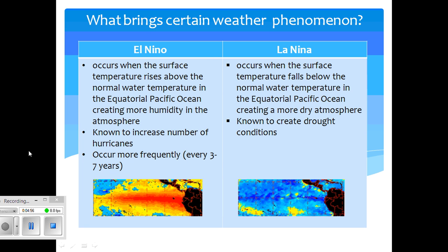El Niño occurs when the surface temperature rises above the normal water temperature in the equatorial Pacific Ocean, creating more humidity in the atmosphere. This, in turn, is known to increase the number of hurricanes and they occur more frequently every three to seven years.